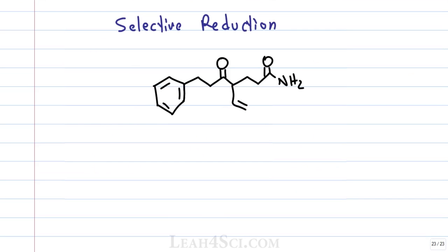Take a look at this example. We have many different options for potential reduction. We have a benzene ring with pi bonds, we have a simple double bond, we have a carbonyl in the form of a ketone, and another in the form of an amide.